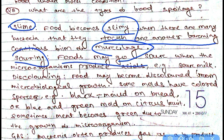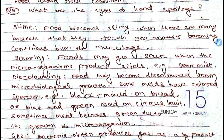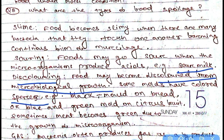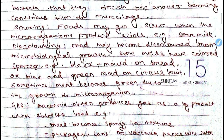Foods may go sour when microorganisms produce acids — for example, sour milk. Another type is discoloring: food may become discolored from microbiological growth. Some molds have colored spores, such as black molds on bread. These colored molds change the color of the food to blue or green. Sometimes meat also becomes green due to the growth of microorganisms.